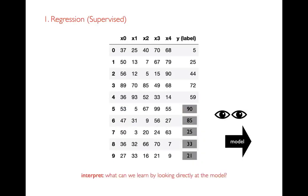Even beyond making predictions, I might look at that model and just try to learn things about the world. Going back to the house-selling example, it's interesting to know for each additional bedroom or bathroom I have, how much does that increase the value of my house? I could use that to make decisions — like maybe I want to do a housing remodel. Am I going to get more benefit by adding another bathroom or another bedroom? So we can learn things about the world and make decisions in that way.